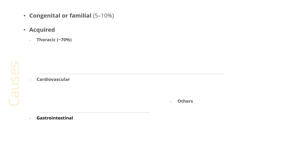Causes include congenital or familial in 5-10% of cases, and the majority are acquired causes related to the lungs, heart, gastrointestinal tract, or diseases of other systems. Thoracic causes account for 70% of cases of clubbing.